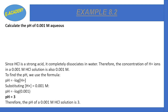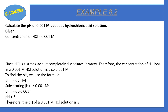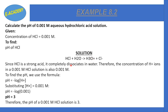Example 8.2: Calculate the pH of a 0.001 molar aqueous hydrochloric acid solution. Given: concentration of HCl = 0.001 molar. HCl + H₂O → H₃O⁺ + Cl⁻. Because HCl is a strong acid and fully ionizes in water, the H⁺ ion concentration equals the HCl concentration, which is 0.001 molar.